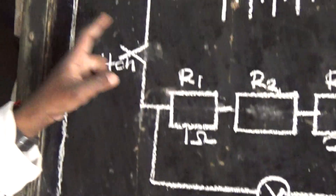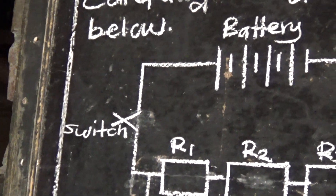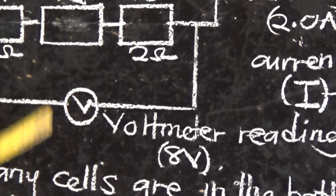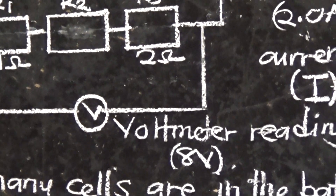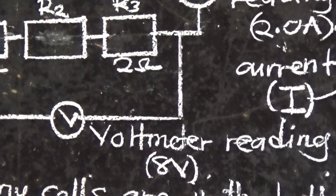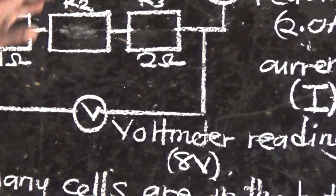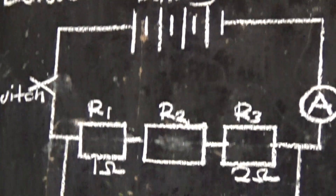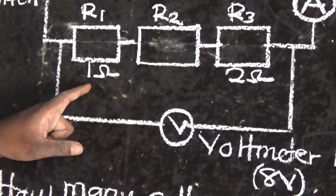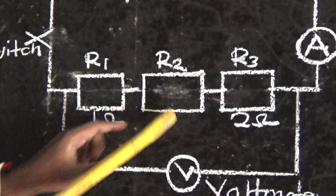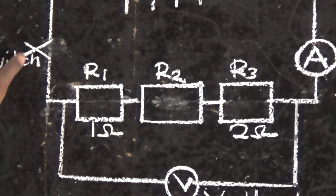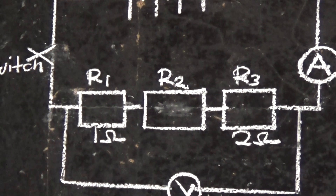Then we have a closed switch. We also have our voltmeter — an instrument used to measure voltage. Our voltage has been given as 8 volts. This circuit also has three resistors: R1 is 1 ohm, R2 has not been given, and R3 is 2 ohms.